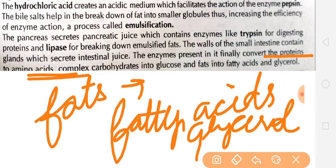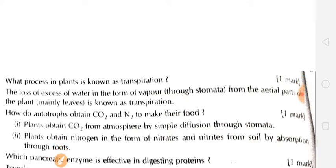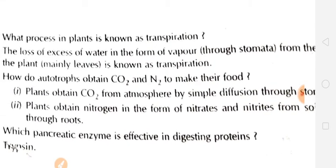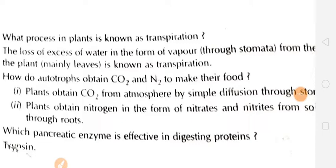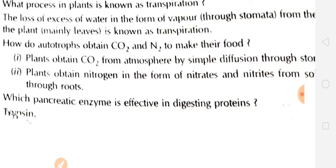Important conversions to remember: proteins convert into amino acids, carbohydrates convert into glucose, and fats convert into fatty acids and glycerol. Now let's see some important questions. What process in plants is known as transpiration? Transpiration is the loss of excess water in the form of vapor from the plant — it is like evaporation of water from the plant body.